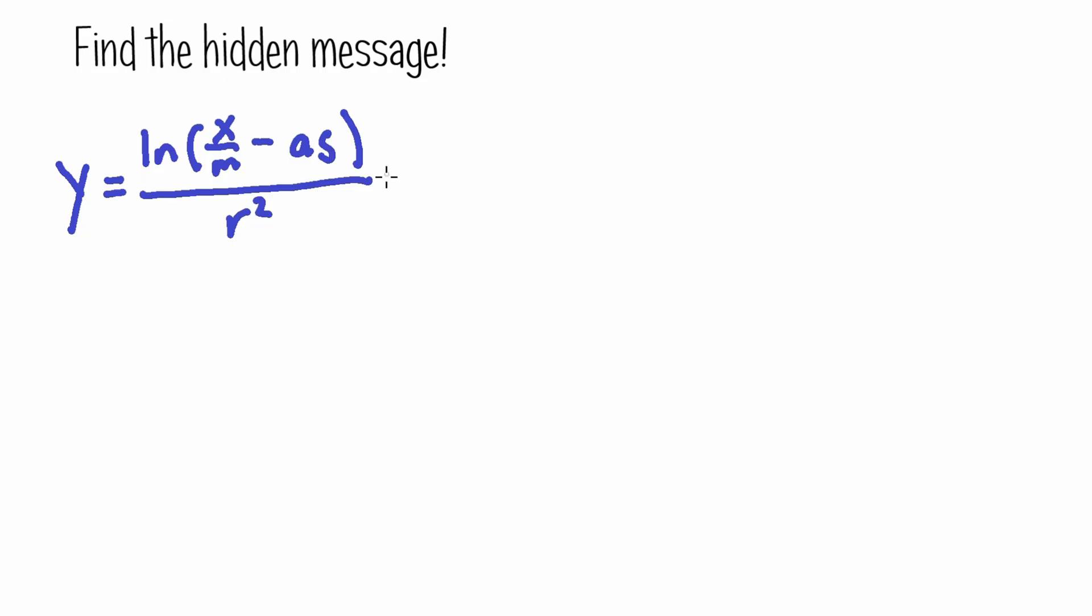Remember, whatever you do to one side you have to do to the other side, so we multiply the left also by r squared. So we have r squared times y equals ln of x over m minus a s. Okay, so we got that done, but we still don't see any message here, right?